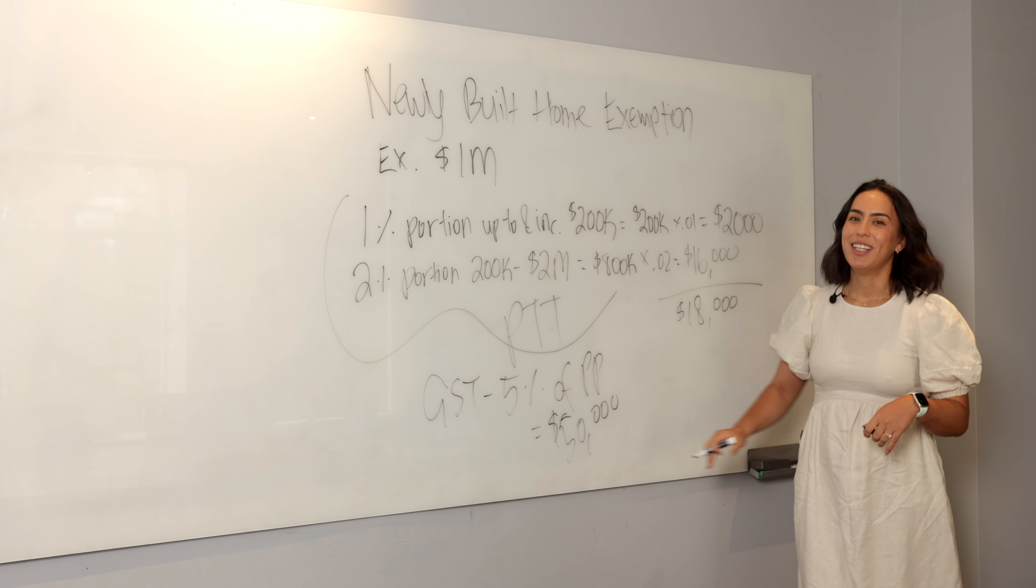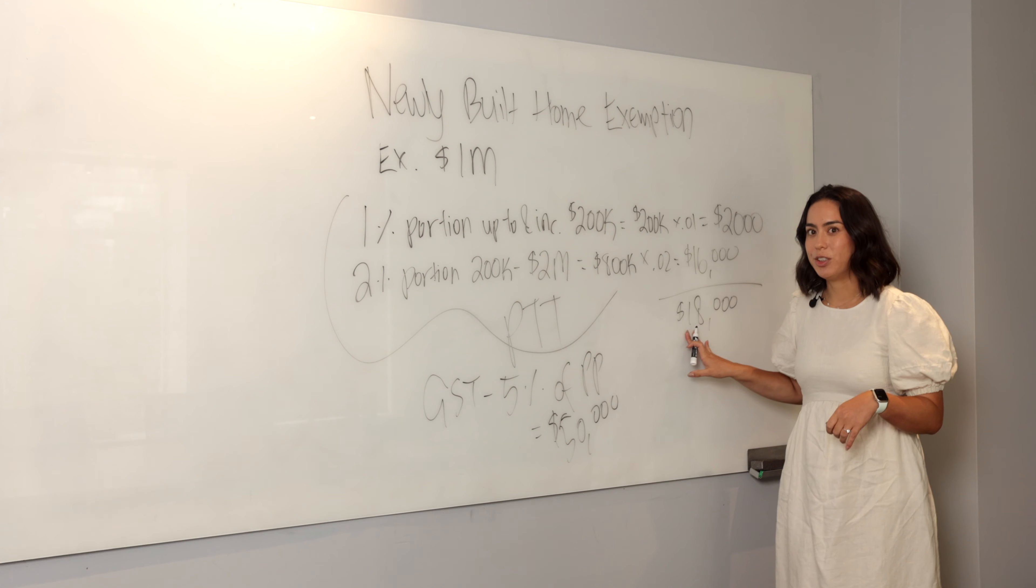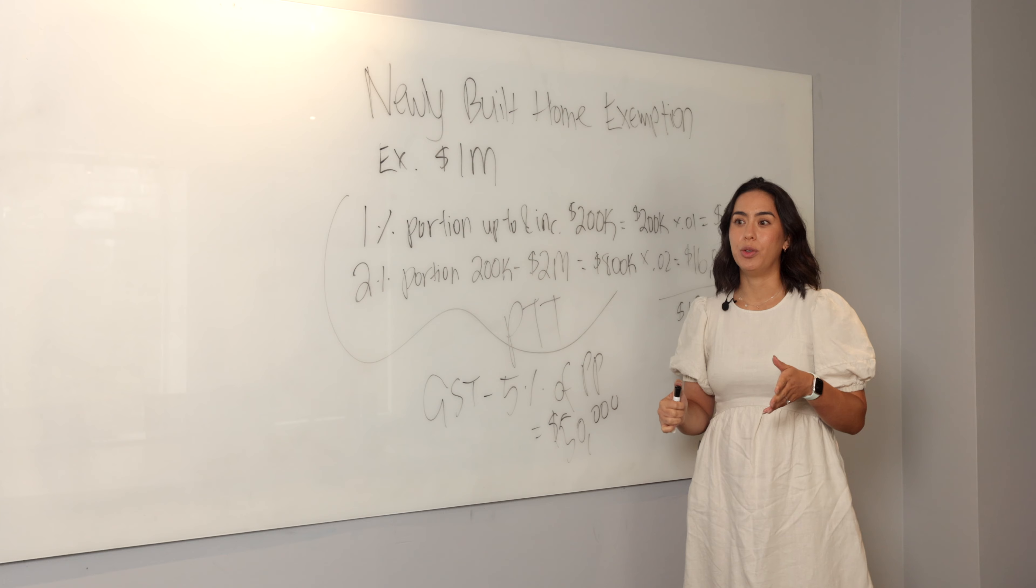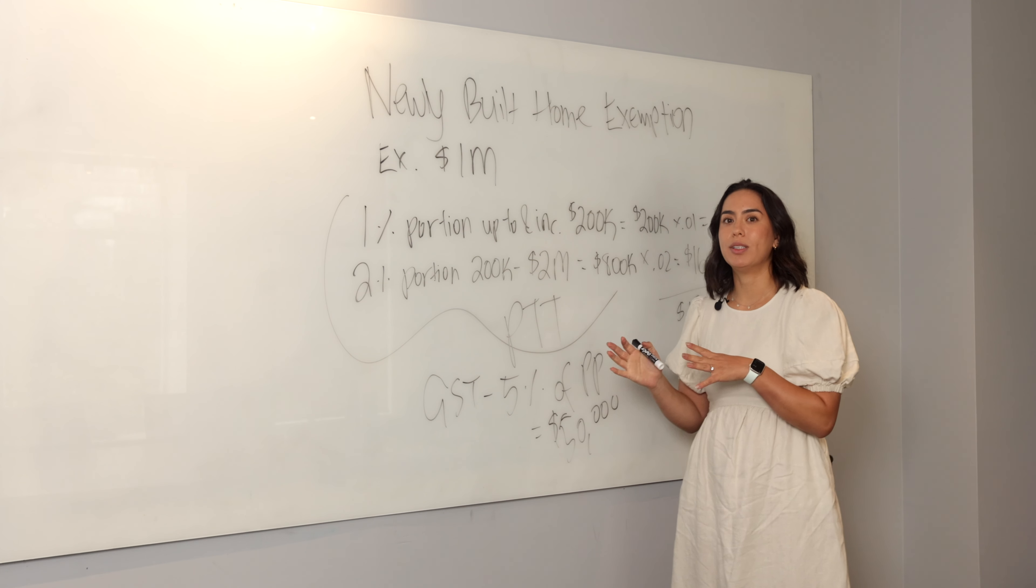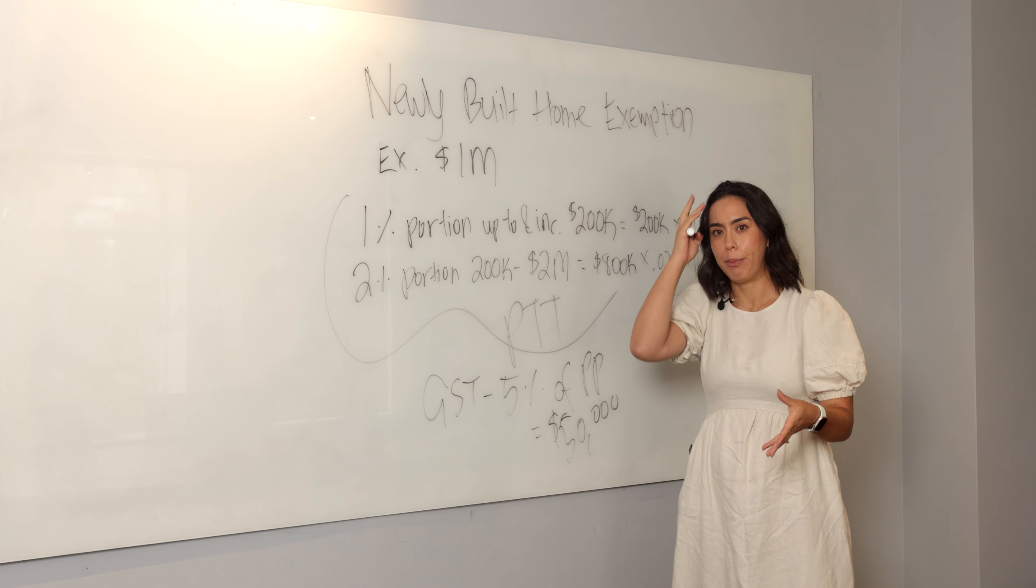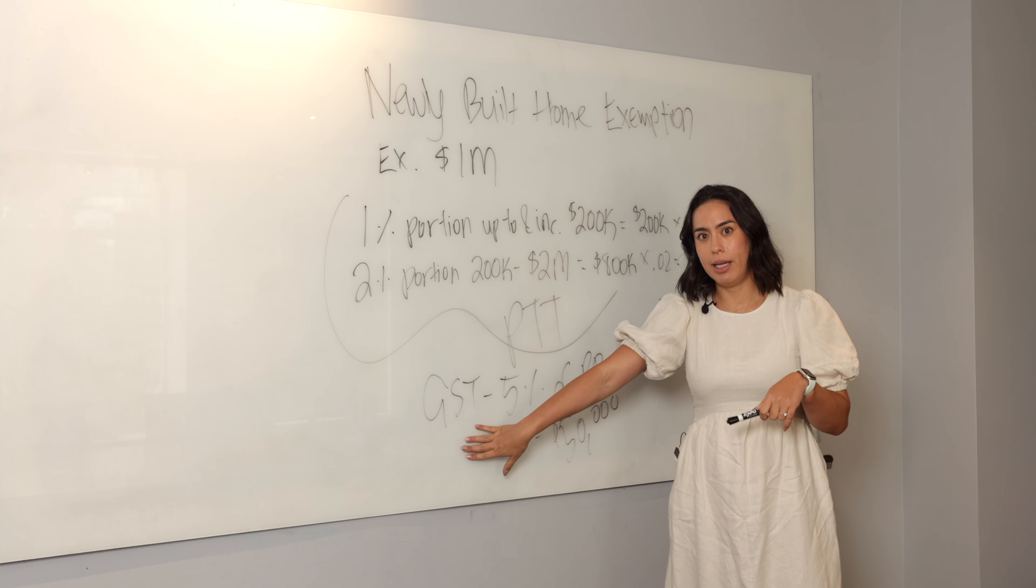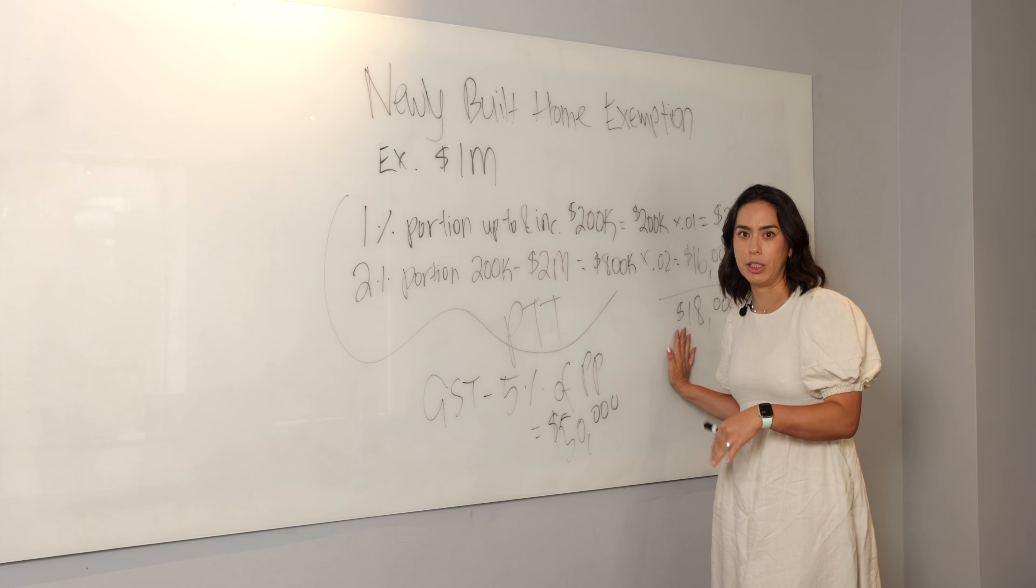You're going to be paying $50,000 in GST, $18,000 in property transfer tax. So you'd have to have $68,000 available to put towards the taxes for purchasing a newly built home. If you are dealing with a resale property, GST does not apply, you're just looking at property transfer tax. GST can be blended into your mortgage, so it's something you could talk to your mortgage broker about, but property transfer tax cannot be blended into your mortgage. It's something that you are going to have to pay in full at completion as a buyer.